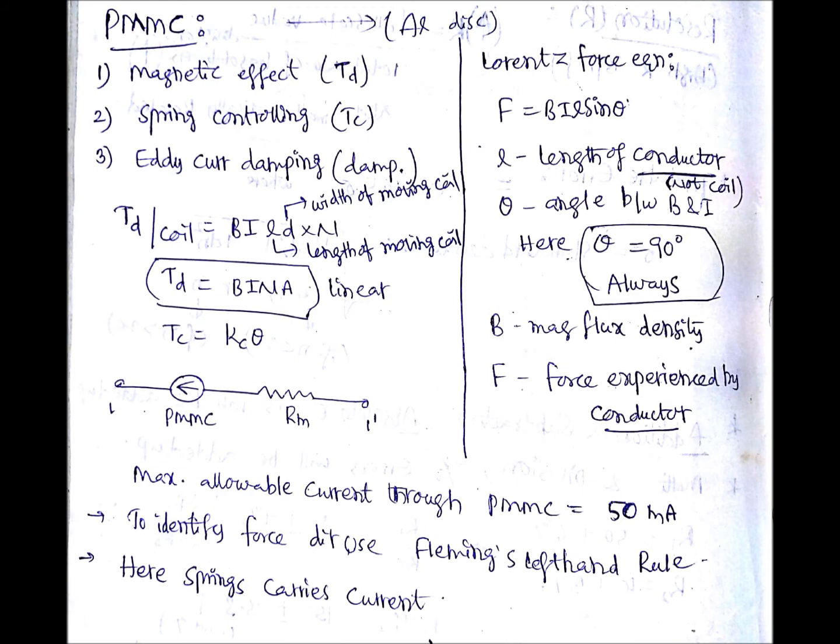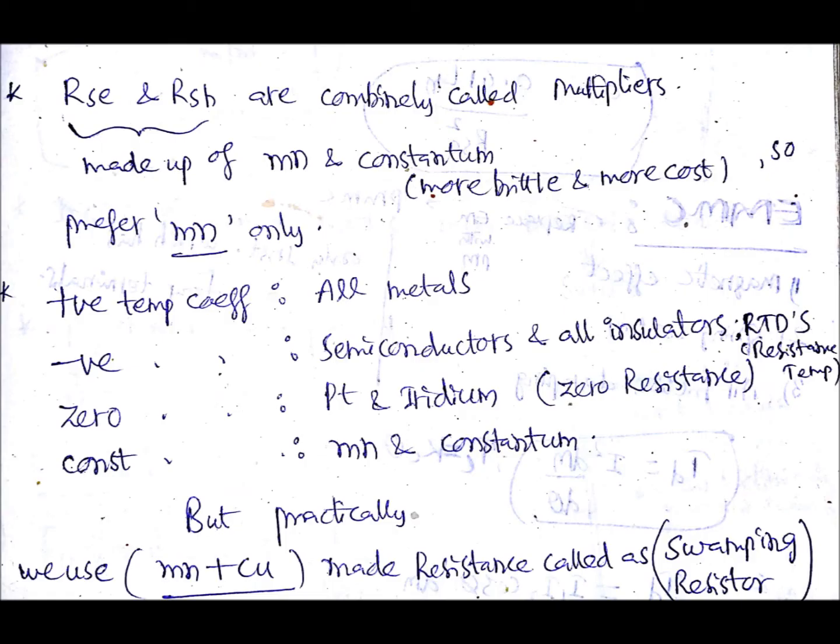The maximum allowable current through PMMC is about 50 milliamps. To identify force direction you need to use Fleming's left hand rule. For identifying the direction of EMF you need to use Fleming's right hand rule, for force you need to use Fleming's left hand rule. Here in case of PMMC, springs are also carrying current.